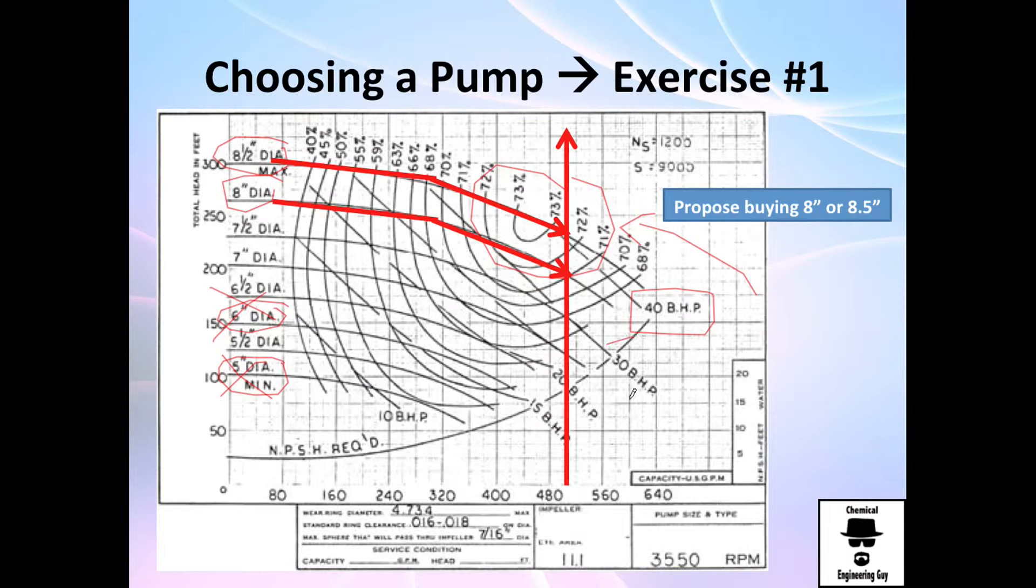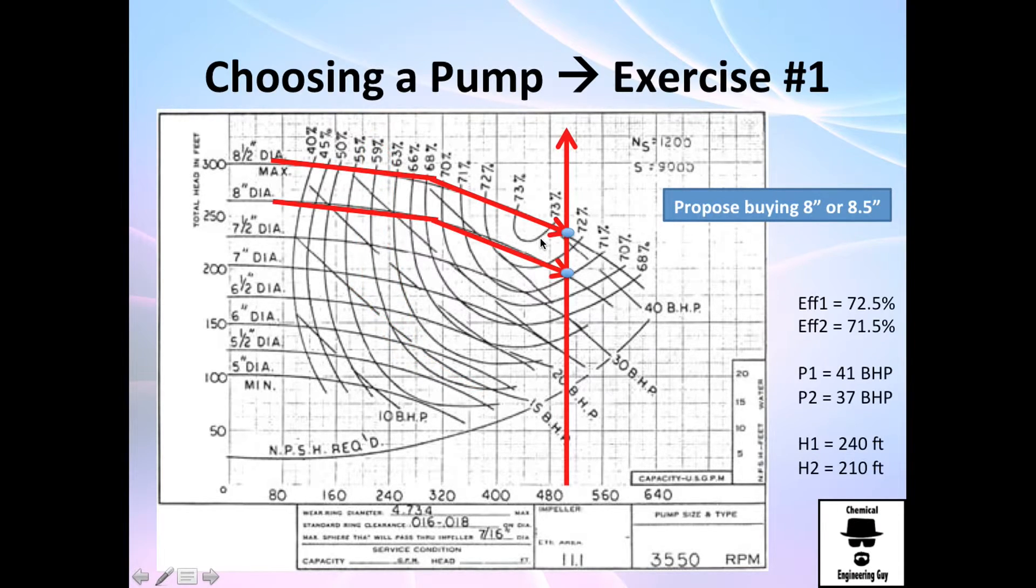Previously we used 14 horsepower with about 16 percent efficiency—very, very bad. Right now we're going to use something around 40 and 30 horsepower, let's say 35 to 37 if we use this line, or 41 if we use this one. But we're going to use almost 20 percent more efficient with this pump.